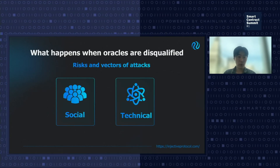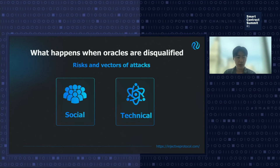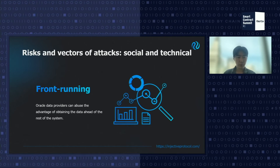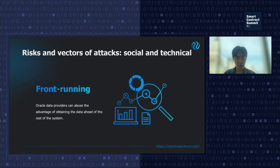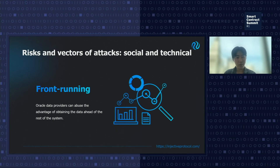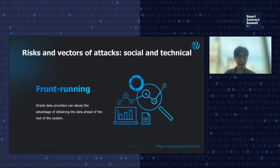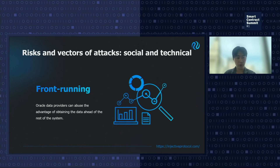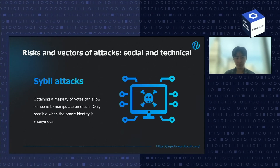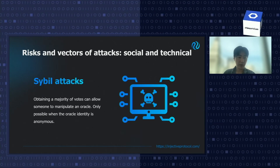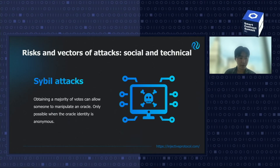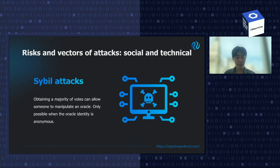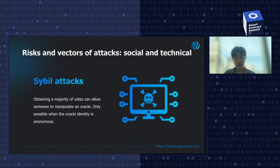What happens when oracles are disqualified or fail? There are social and technical standpoints. One interesting issue is front-running prevention — oracle data providers can abuse the advantage of obtaining data ahead of the rest of the system, making trades and beating on-chain enforcement for profitable outcomes. Another issue is that poorly designed oracles can face Sybil attacks, where obtaining a majority of votes allows someone to manipulate the oracle — and that is only possible when oracle identity is permissionless and anonymous.